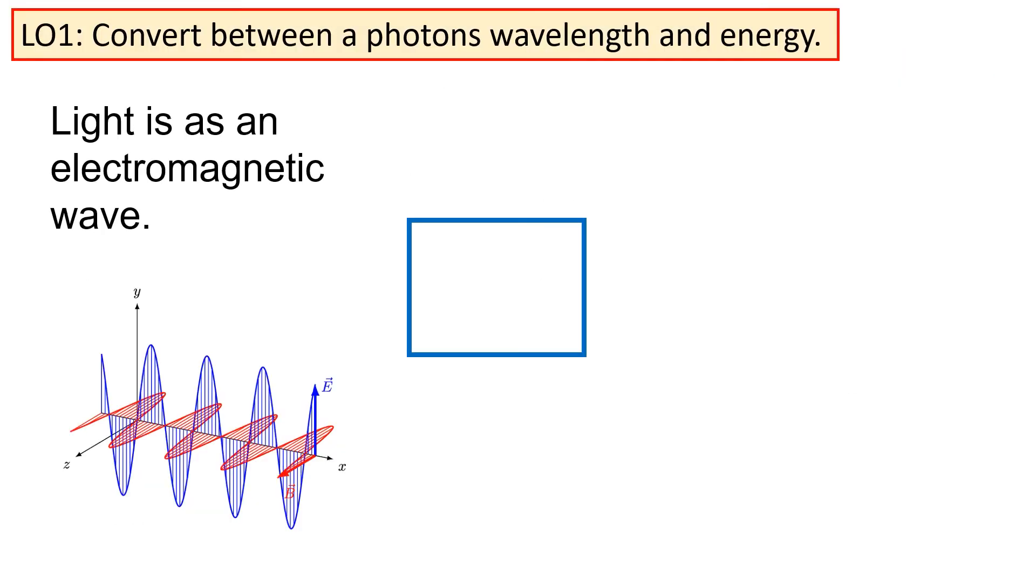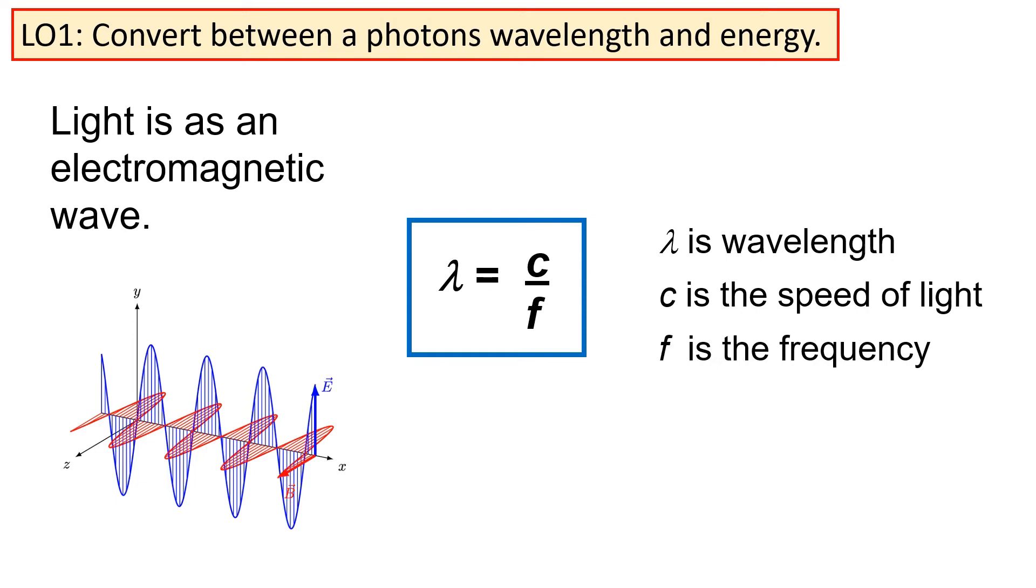When you've previously thought about light, you've probably considered it to be a wave. That's true for any electromagnetic radiation. The wavelength of light is inversely proportional to the frequency, where c is equal to the speed of light, 3 times 10 to the power 8 meters per second. This is, of course, a constant, assuming we're moving through a vacuum.